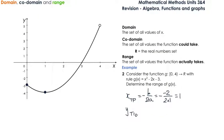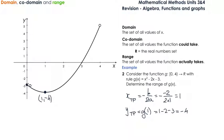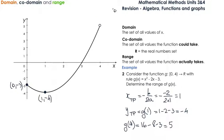To calculate the y-coordinate of the turning point, substitute 1 into the function. g(1) equals 1 squared, which is 1, minus 2 times 1, which is 2, take away 3 — this gives us negative 4. So the coordinates of the turning point are (1, −4). Now calculate g(4): 4 squared is 16, take away 2 times 4 which is 8, take away 3, giving us 5. So we have three key points: (0, −3), (1, −4), and (4, 5).